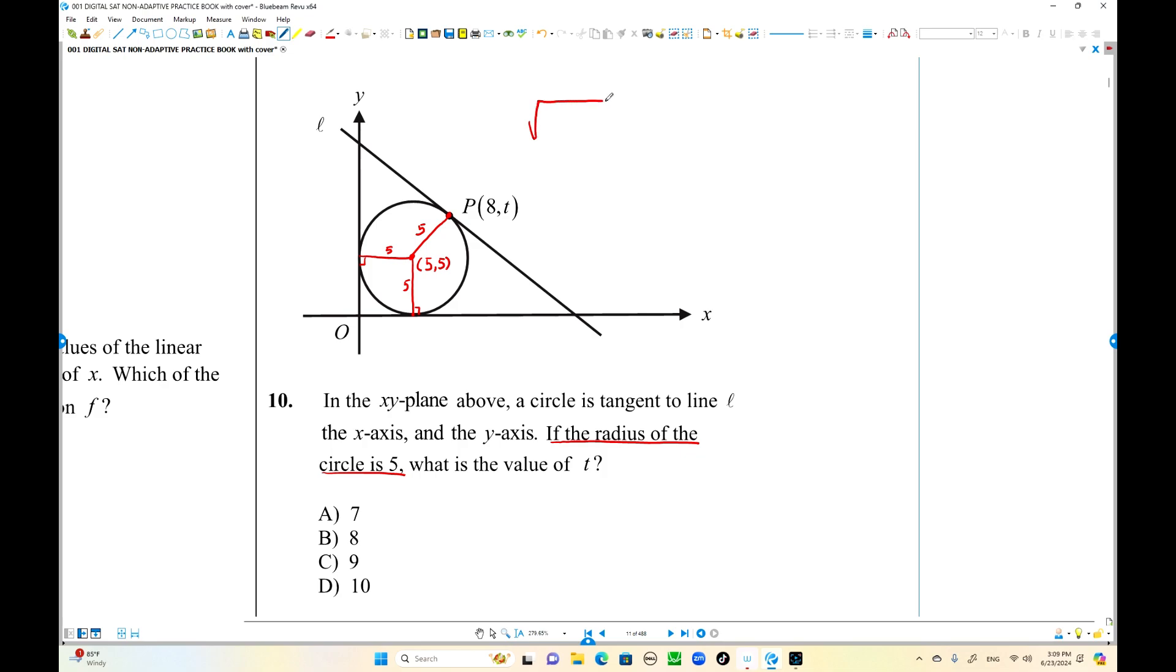Square root, x2 minus x1 squared plus y2 minus y1 squared. y2 is t, y1 is 5 squared. That is equal to 5. That is distance formula, right? Okay, squares. 8 minus 5 is 3 squared is 9. Plus t minus 5 squared equals 25. Minus 9 both sides, that is going to be 16.